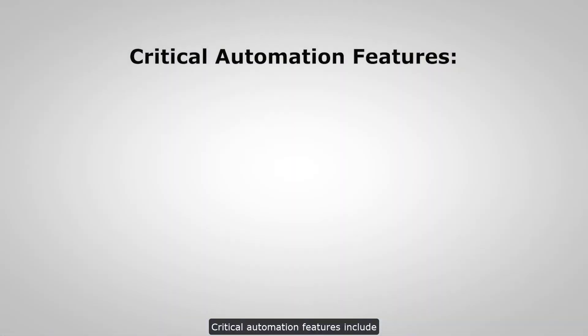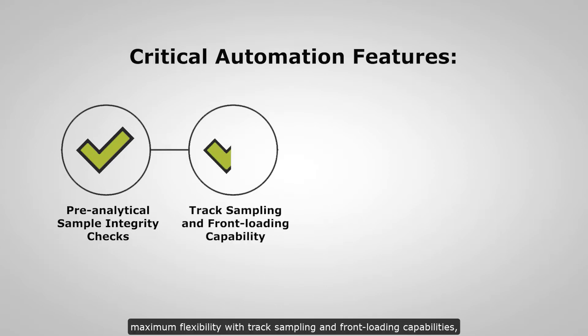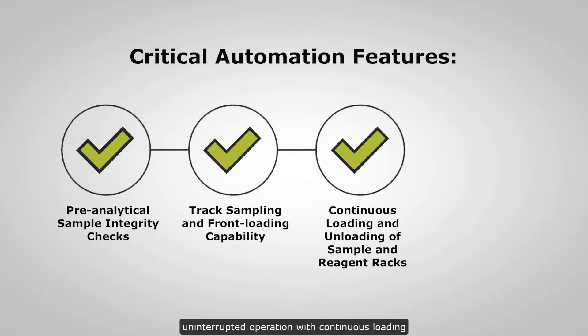Critical automation features include pre-analytical sample integrity checks, maximum flexibility with track sampling and front-loading capabilities, uninterrupted operation with continuous loading and unloading of both samples and reagent racks, as well as cuvettes and automatic waste disposal.